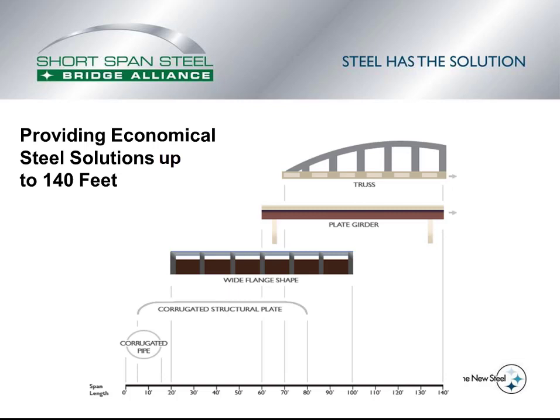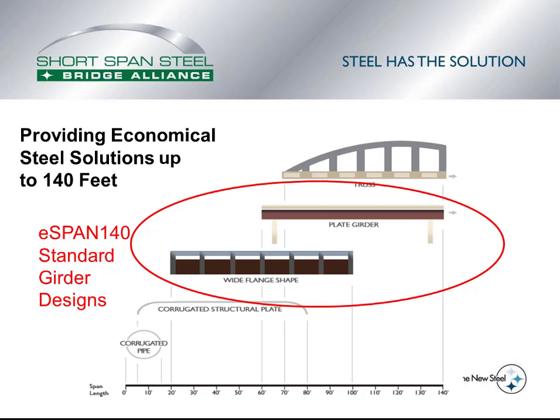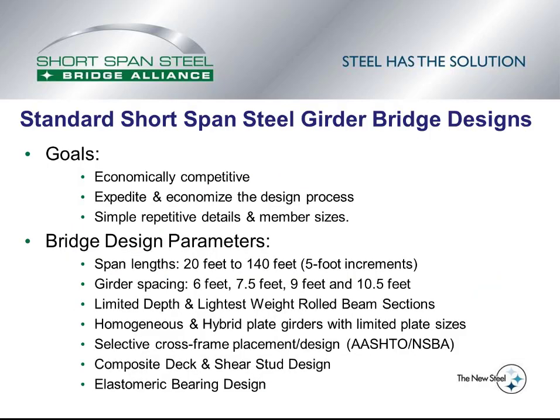This graph shows the types of bridges considered. On the lower end it includes corrugated pipe, moving up to corrugated structural plate, then wide flange girder bridges, plate girder bridges, and for longer spans, truss bridges. This video will be looking at the girder type bridges under eSpan 140, which includes wide flange and plate girder bridges.